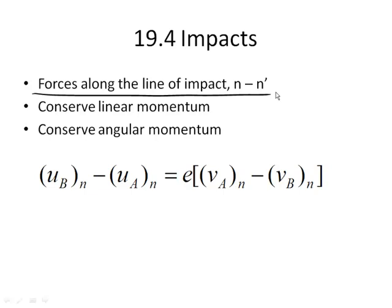We did that the same way in linear momentum case as well. Along the line of impact is what we're going to consider the normal axis, or the nn' axis.